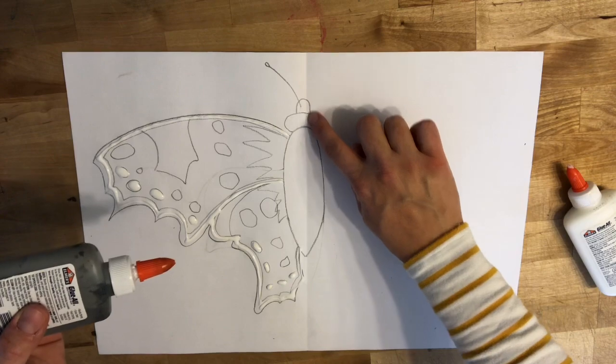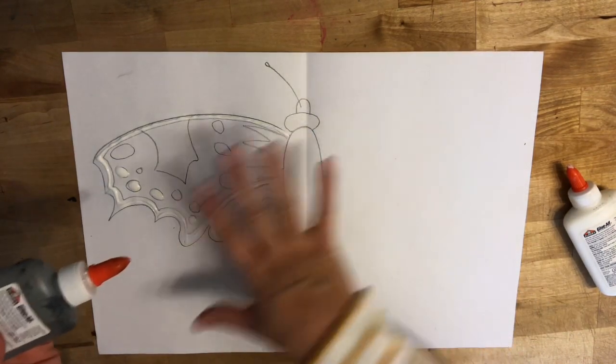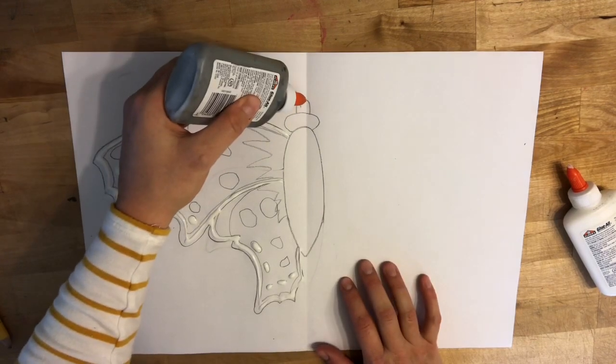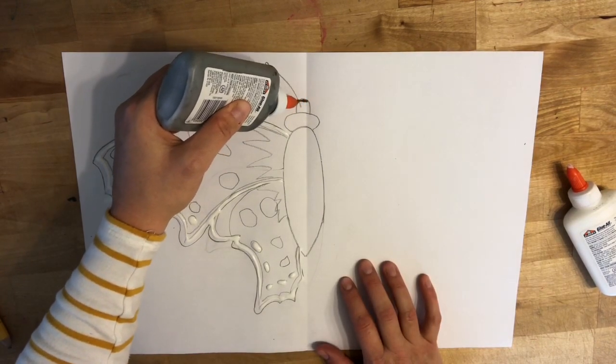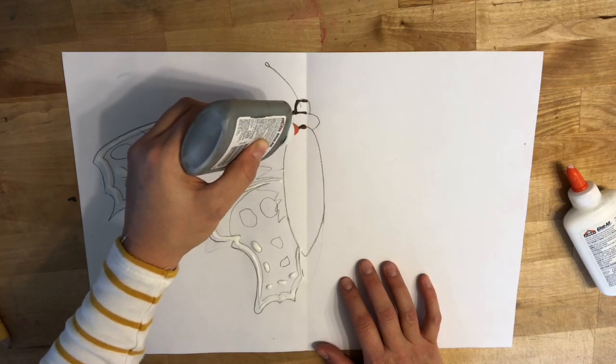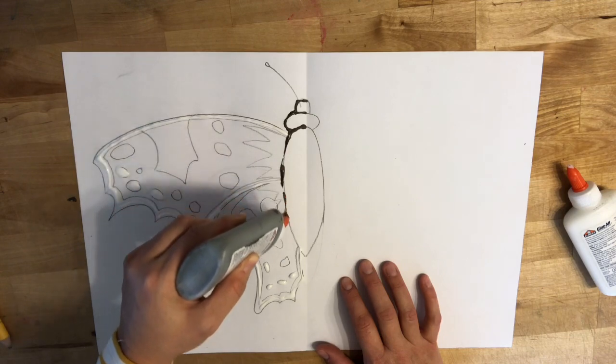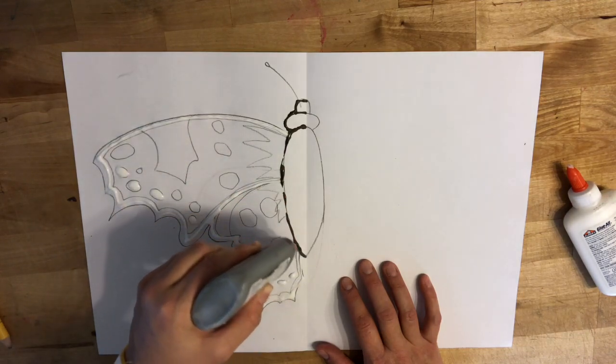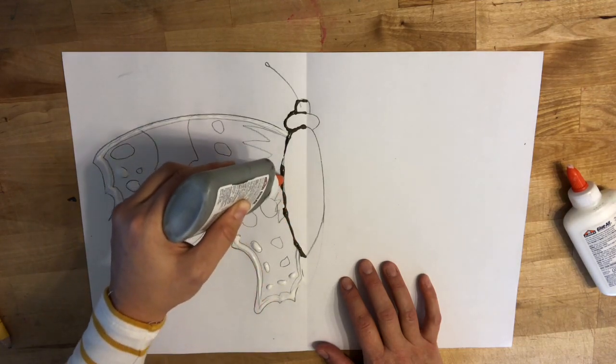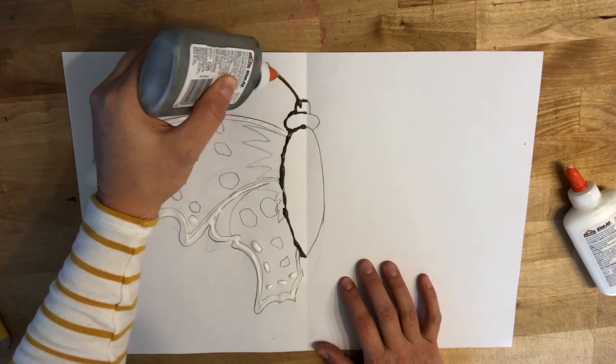Now I'm going to use my black glue. Remember, I don't have to do this side. I'm only doing what's on this half of the fold. So I'm going to trace around with my glue bottle just on this half of my paper. If I make a mistake, that's okay. We can make it work. We're artists and nothing is going to be perfect.